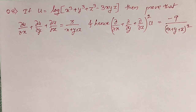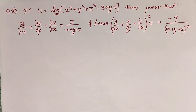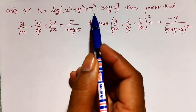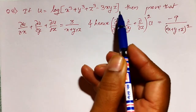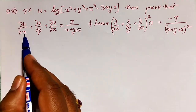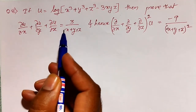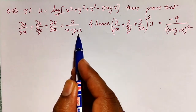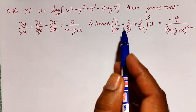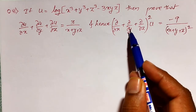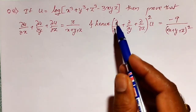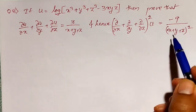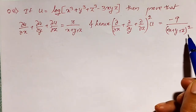In this video, I am going to solve one simple example on partial differentiation. That is, if u is equal to log of x cube plus y cube plus z cube minus 3xyz, then we have to prove that ∂u/∂x plus ∂u/∂y plus ∂u/∂z equals 3 divided by x plus y plus z. And hence, we have to prove that (∂u/∂x plus ∂u/∂y plus ∂u/∂z) whole squared times u equals minus 9 divided by (x plus y plus z) whole square.